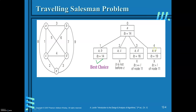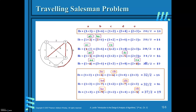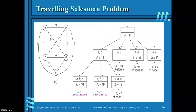Out of all four nodes, A to B is the best choice. Once you have decided to go to B, you have only three choices: either you go to C, or you go to D, or you go to E.